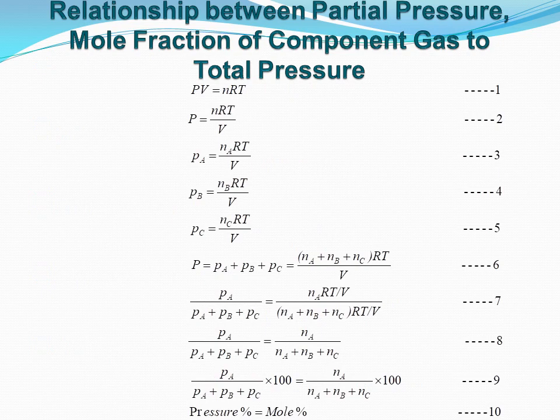Then we come to the relationship between partial pressure and mole fraction of component gas in total pressure. The composition of component gases in a gas mixture is generally expressed in terms of volume percent. For a gas mixture in a closed vessel, molecules of each component are distributed throughout the entire volume. From the ideal gas law PV = nRT, rearranging gives P = nRT/V. Writing for each component: P_A = N_A·RT/V, P_B = N_B·RT/V, and P_C = N_C·RT/V.